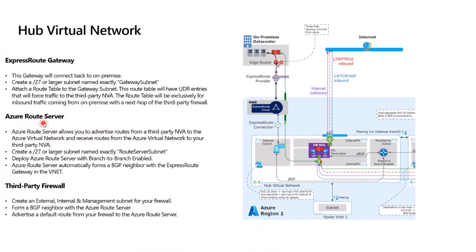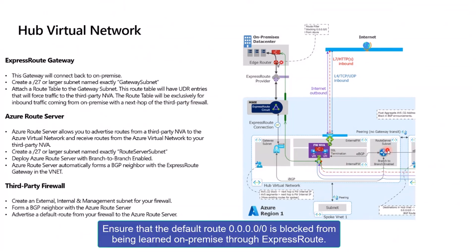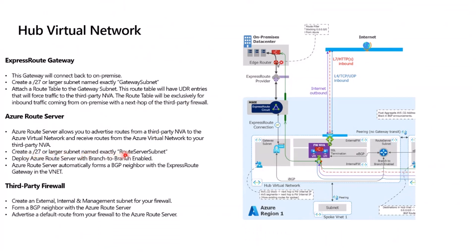Now we talk about our Azure Route Server. The purpose of the Azure Route Server is it gives you the ability to inject routes from a third-party NVA into the Azure network. One example would be a default route — you're injecting a default route from your third-party NVA into the Azure Route Server, which will advertise these routes back over to the BGP NVA. You'll need to create a slash 27 or larger subnet named exactly RouteServerSubnet, deploy the Azure Route Server with branch-to-branch enabled. Azure Route Server automatically forms a BGP neighbor with the ExpressRoute gateway in the VNet — that IBGP neighbor is automatic.